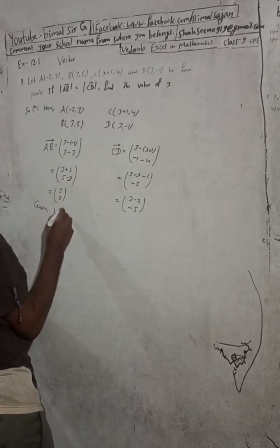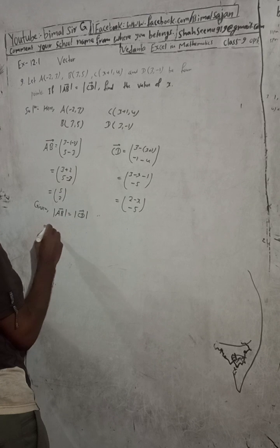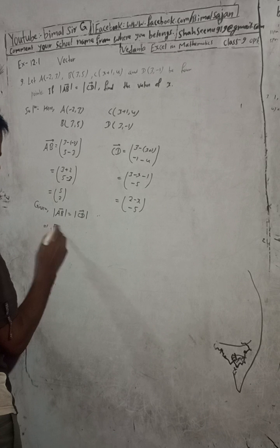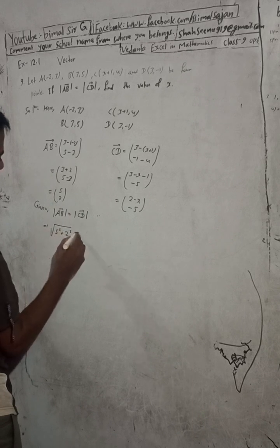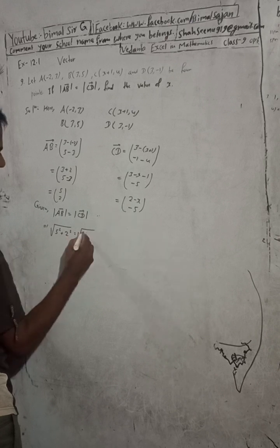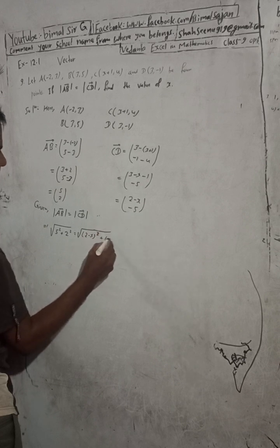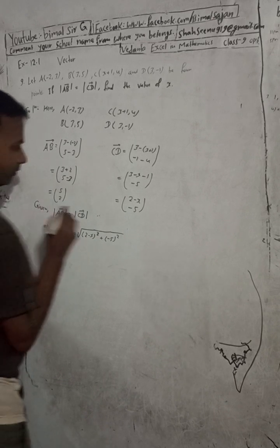Given that the modulus of vector AB equals the modulus of vector CD, this means: √(5² + 2²) = √((2-x)² + (-5)²). Squaring both sides: 5² + 2² = (2 - x)² + (-5)².